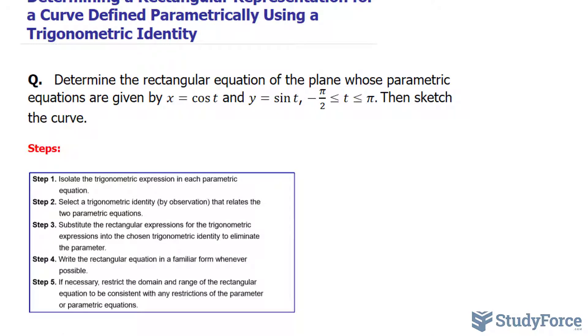Step number one says isolate the trigonometric expression in each parametric equation. Notice that in both of our parametric equations, the trigonometric function is already isolated. So step number one is already done.